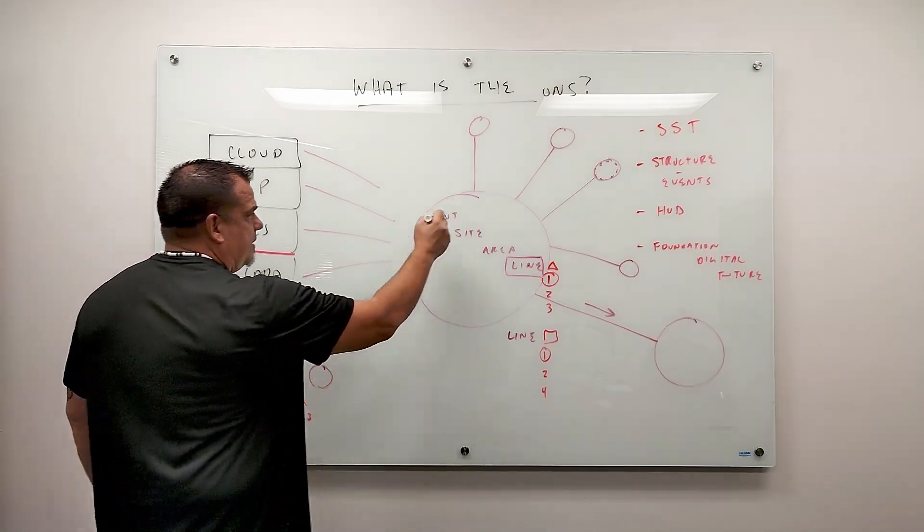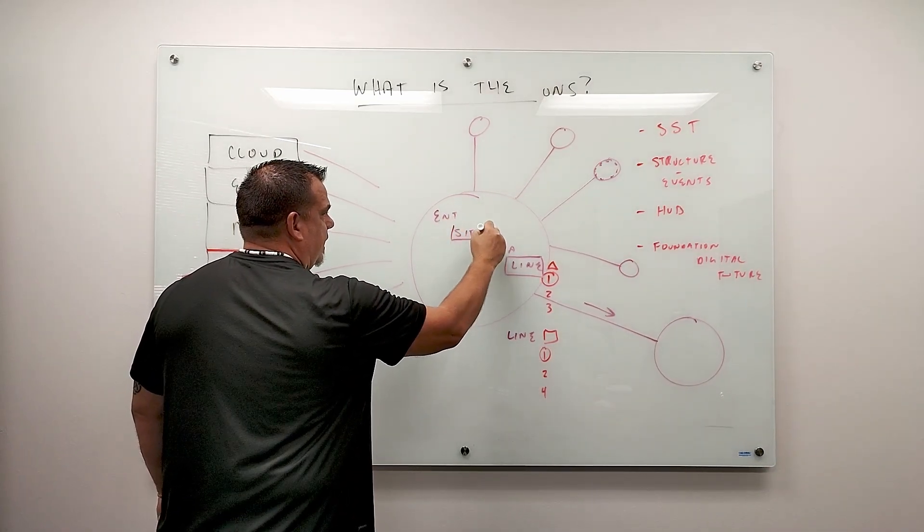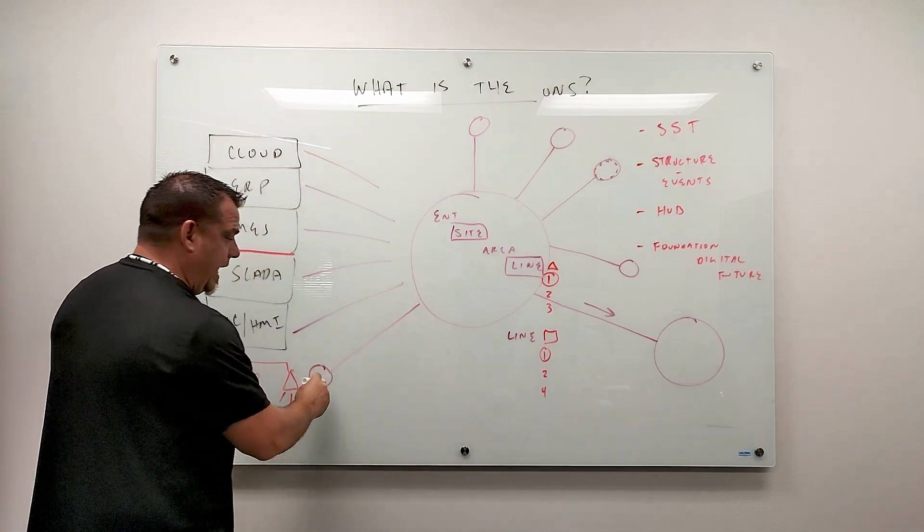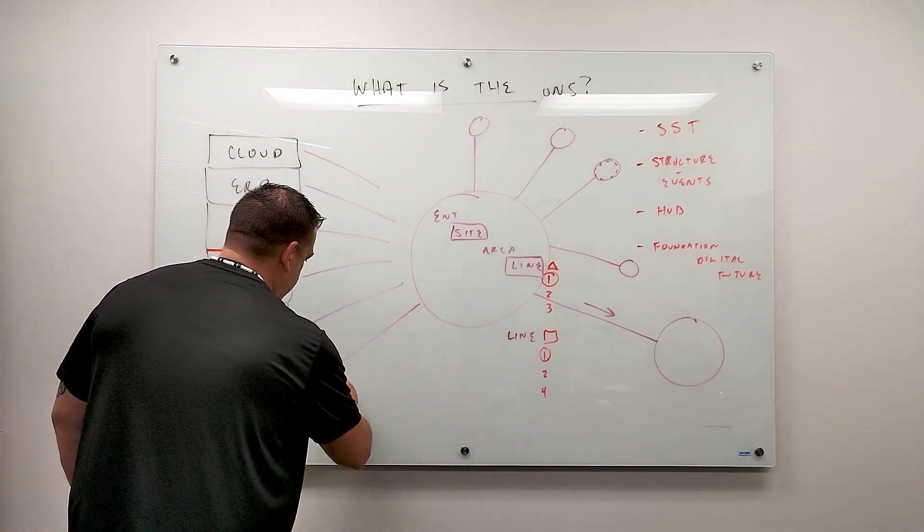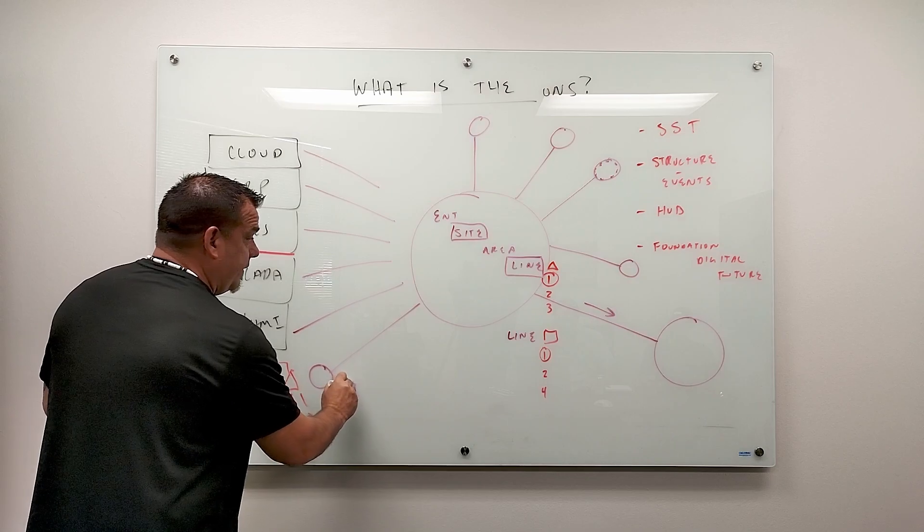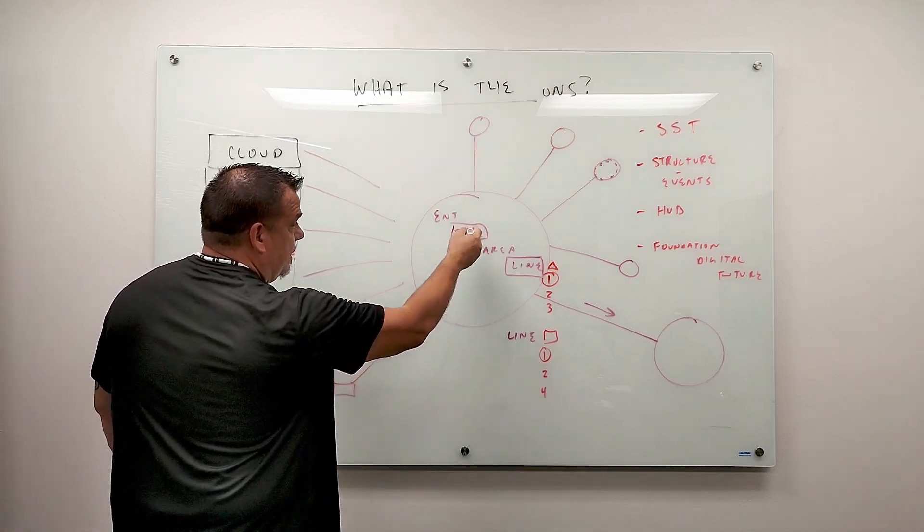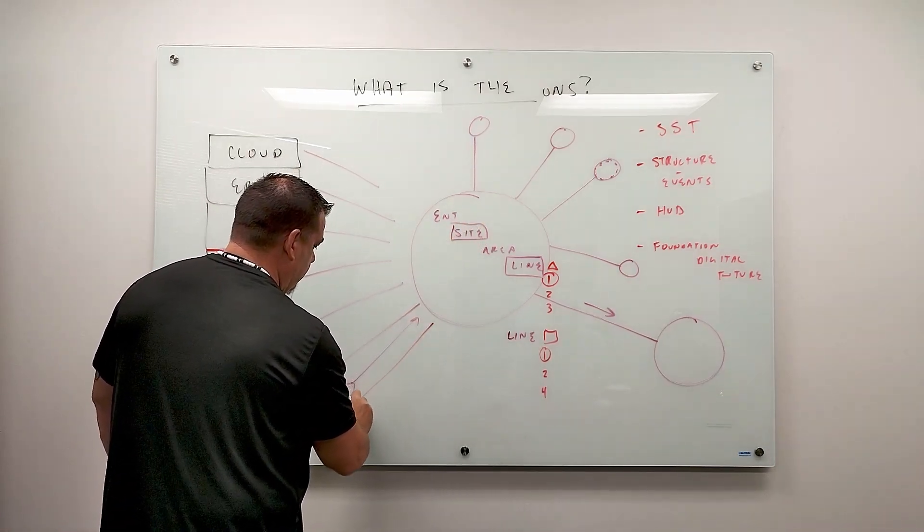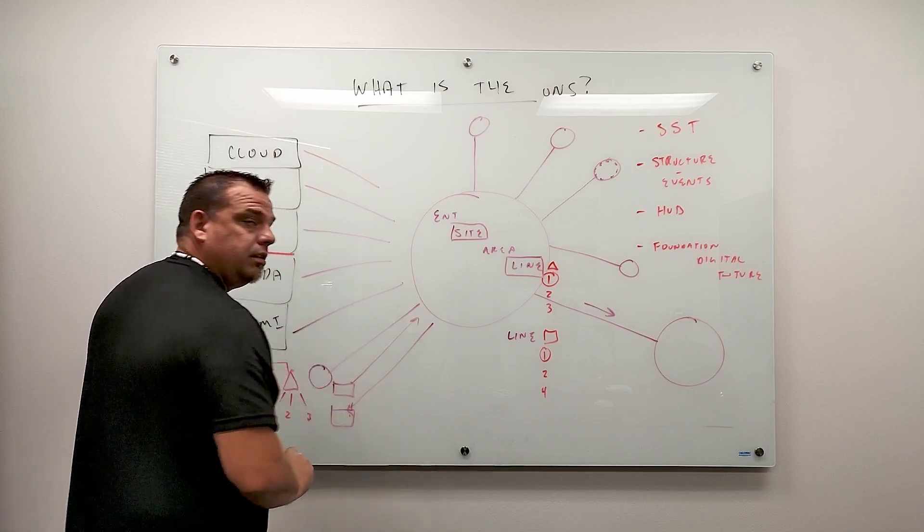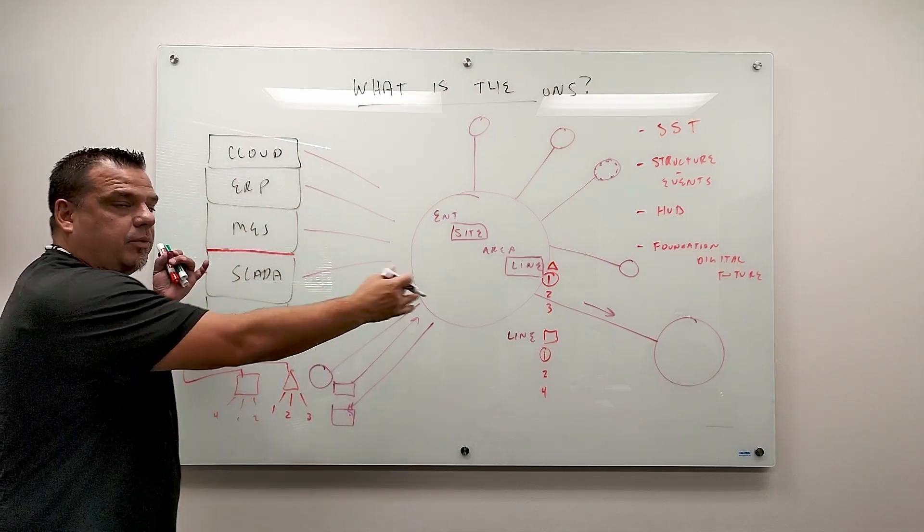But then I set up a subscription and I say, give me the entire site. All right. So now what I've got are two namespaces. The one, the triangle one that I send up and the site one that I bring back down. It's everywhere.